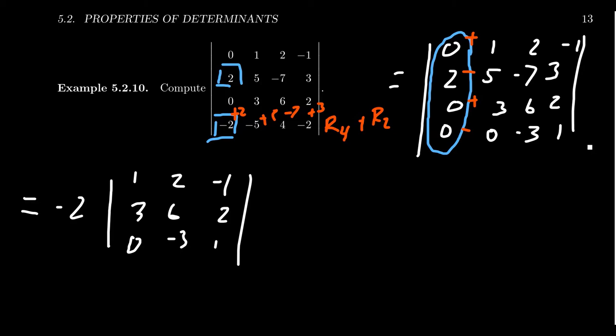Notice we could have chosen to interchange the two rows so we get the 2 at the top, but then when we cofactor expand there's a cost — a negative sign from the interchange. It's wonderful how these different techniques end up doing the same thing. Replacement is free, you factor out scalars, and you can interchange or just use cofactors to make sure you have the right sign.